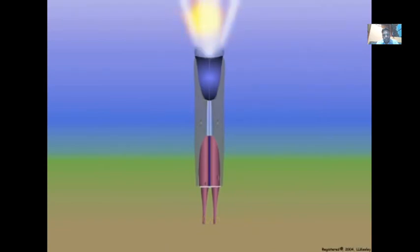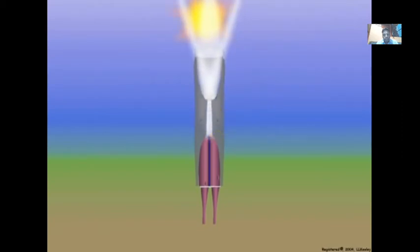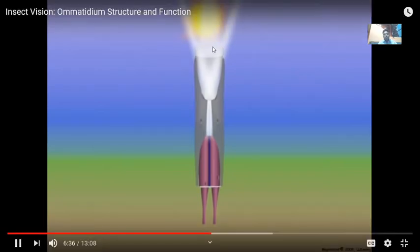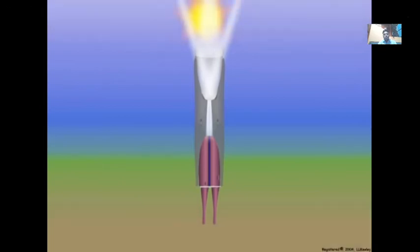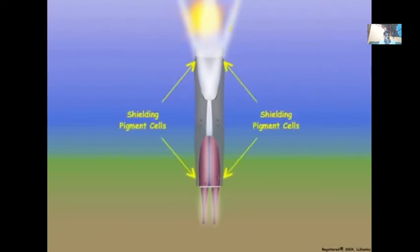In scotopic ommatidia, incoming light is focused on the base of the crystalline cone and conducted to the rhabdom by the crystalline tracts. Unlike photopic ommatidia, scotopic ommatidia are sensitive to the changes in light intensity that occur during the day and night cycles, and they detect light differently during the light and dark phases of the daily circadian cycle. During the daytime, when light is abundant, scotopic ommatidia detect light similar to photopic ommatidia. The shielding pigments in the secondary pigment cells absorb light rays that enter the corneal lens at an angle, and each ommatidium detects light independently of neighboring ommatidia, just as in photopic ommatidia.